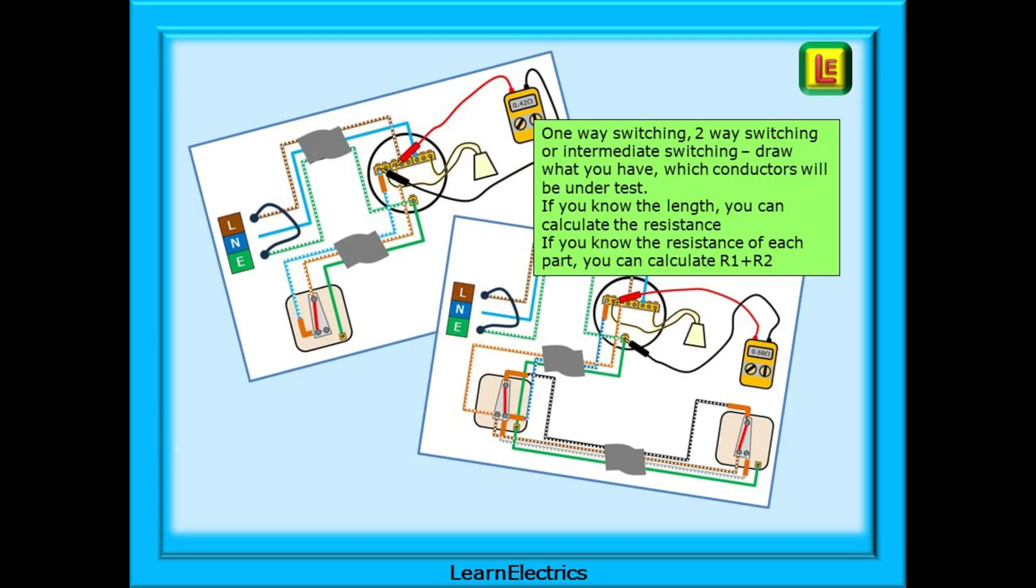One way switching, two way switching, or even intermediate switching. Draw what you have and decide which conductors would be under test. Using a little table as shown in the video, if you know the length you can calculate the resistance. If you know the resistance of each part you can calculate R1 plus R2.